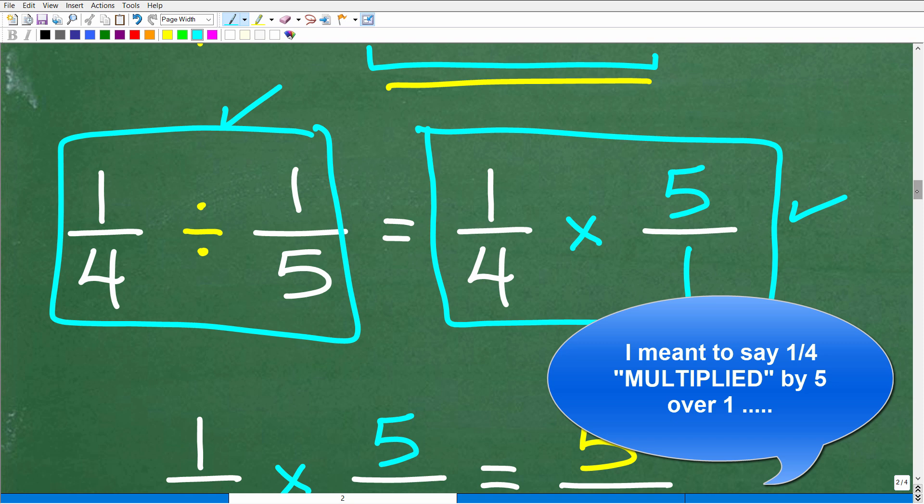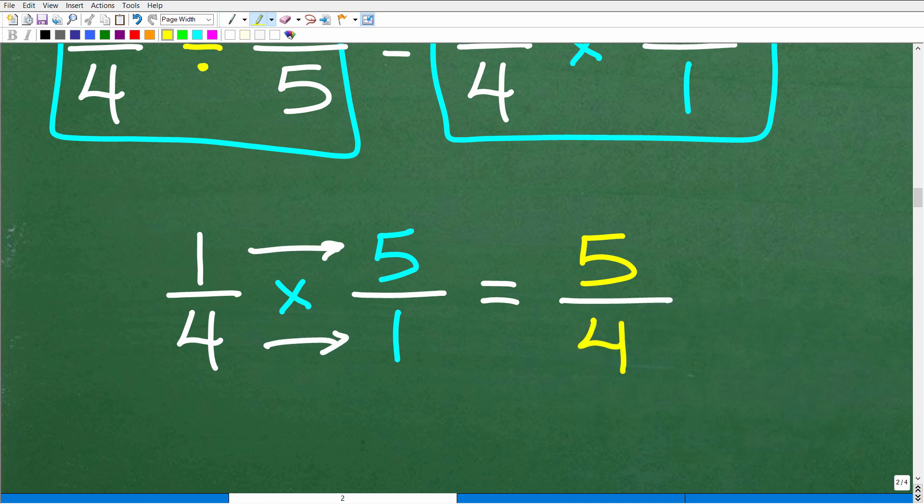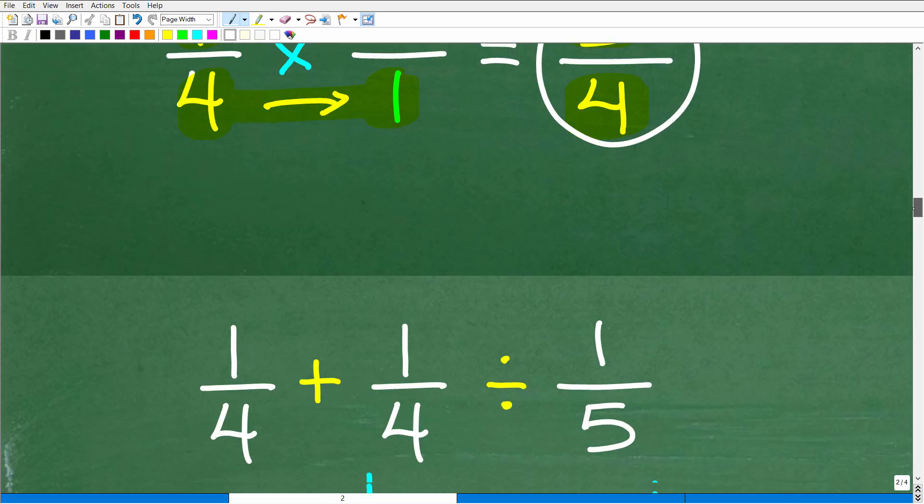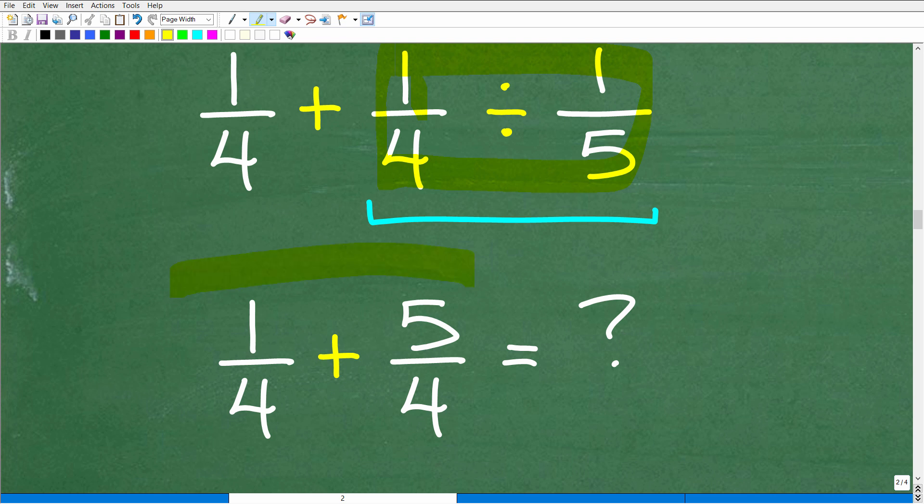So now we're going to go ahead and do this problem right here, which, of course, is going to be the answer to this. All right, so one-fourth divided by five over one, what does that equal to? Well, this is super simple. When we're multiplying fractions, all we need to do is multiply the respective numerators and denominators. So one times five is, of course, five, and four times one, of course, is four. All right, so what we have now is five over four. All right, so now where are we at? Well, we've got to figure out, you know, keep track of what we're doing here. So we just figured out one-fourth divided by one-fifth, and that is five over four. So now our problem is down to one-fourth plus five over four.